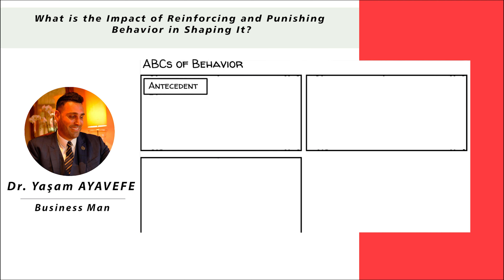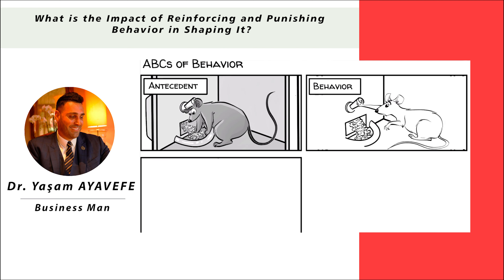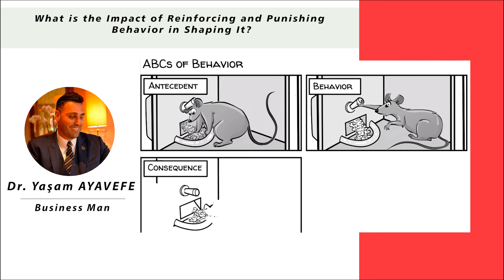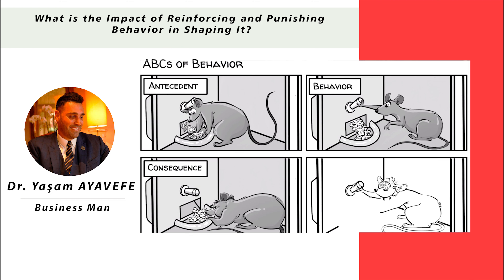Today this is known as the ABCs of behavior. A stands for antecedent — the rat accidentally hits the lever that triggers the release of food. B stands for behavior, and refers to the response — the rat keeps pressing the lever. C stands for consequence — food keeps coming out. The strength of the response depends on the schedule of reinforcement. If there is always food after pressing, the rat behaves predictably. If the food is released randomly, the rat behaves erratically, like an addict.